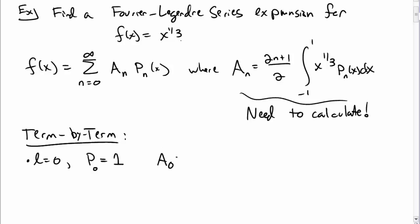So the 0th coefficient is then just 1/2, the integral from negative 1 to 1 of x to the 1/3rd. Interestingly enough, that's just 0, right?